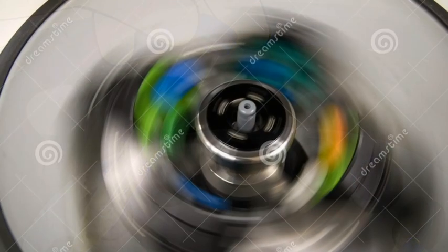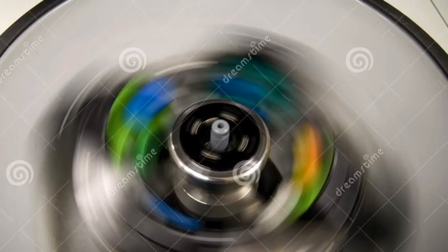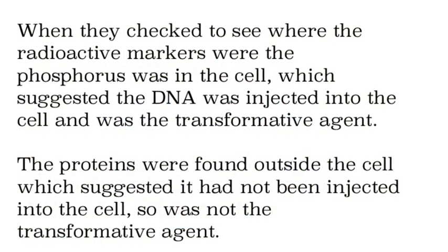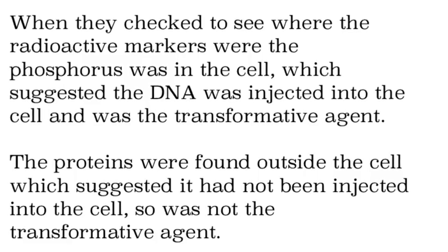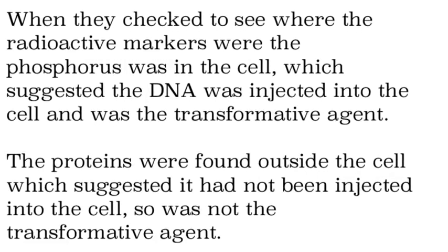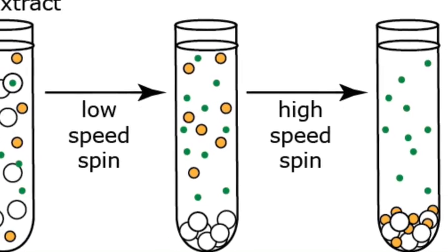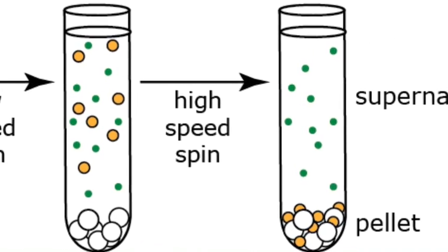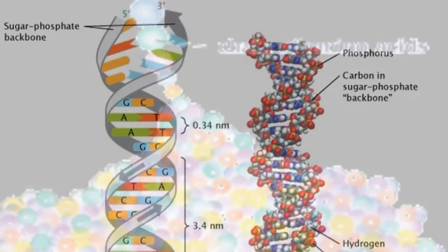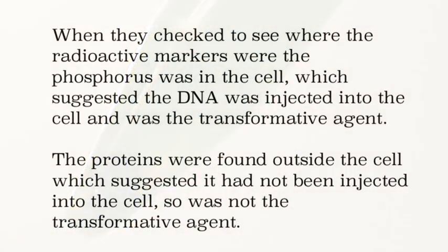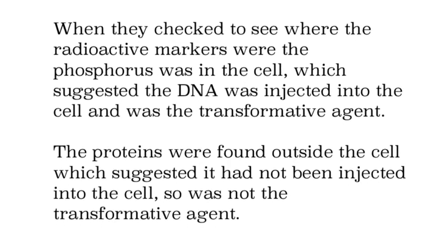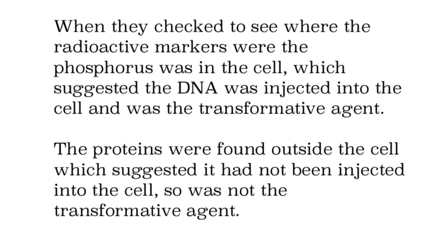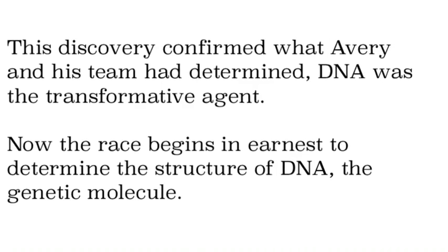When they analyzed the results, they found that the DNA was in the heavy part — the pellet — at the bottom. The protein was in the supernatant, which is the liquid part at the top. As it spins, the supernatant flows to the top and the pellet sinks to the bottom. They found that DNA was in the pellet, which suggests that the DNA went into the cell. This was pretty solid evidence that DNA had to be the transformative agent, especially since the protein was on the outside and never went into the cell.